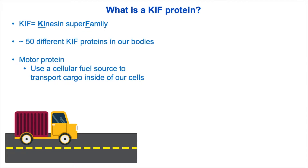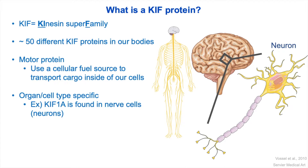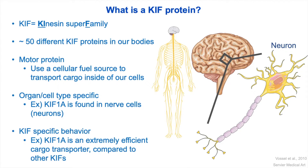But in order to understand how KIF-1A transports cargo within our cells, we need to understand the role of KIF-1A within our bodies. KIF proteins tend to be organ or cell type specific. For example, KIF-1A is predominantly found throughout our nervous system. Specifically, KIF-1A facilitates cargo transport within our nerve cells, otherwise known as neurons. KIF-1A has been shown to transport many types of cargo needed to keep our nerve cells functioning properly, such as building blocks to create connections with other cells or nutrients to keep cells healthy.